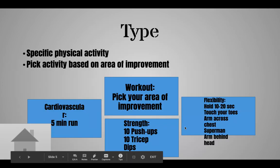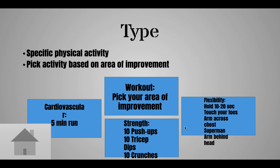The last letter is T for type — the type of workout you are completing. It is a specific physical activity you pick based on an area of improvement. When you're working on cardiovascular endurance, you're going to be running, biking, or swimming — those are different cardiovascular exercises. If you're working on improving your strength, whether upper body or lower body, some examples would be push-ups, tricep dips, and crunches.